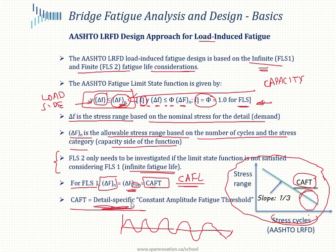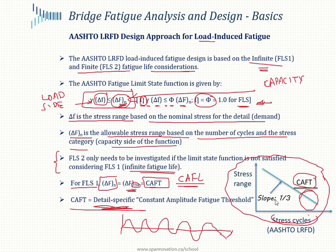The CAFT will be higher for categories A and B relative to D and E. Given that the SN curve slope is one-third, when we increase the stress by a factor of two, it reduces the fatigue life by a factor of two to the power of three, or eight. This is evident from the graph, and the equations that follow will bear that out.